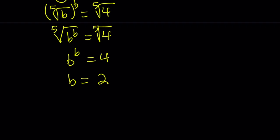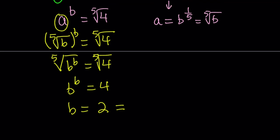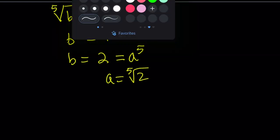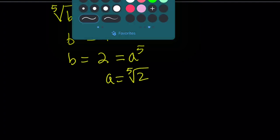Now, we have b equals 2 and b is the fifth power of a, so b can be written as a to the fifth power. From here, a becomes the fifth root of 2. And that's what we were looking for. That brings us to the end of the first method and the beginning of the second method.